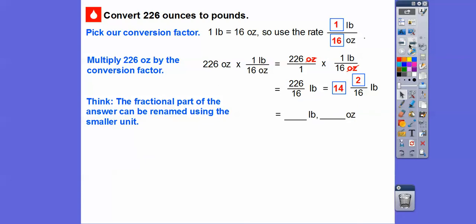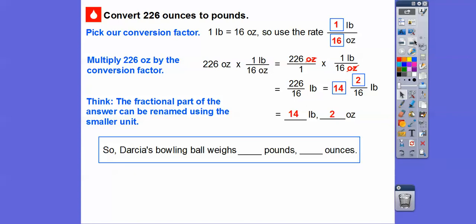This is going to be represented as 14 and 2 sixteenths. The fractional part of the answer can be renamed using the smaller unit. Instead of 2 sixteenths of a pound, since 1 pound equals 16 ounces, 2 sixteenths is going to represent 2 ounces. So this is going to be 14 pounds and 2 ounces. Darcia's bowling ball weighs 14 pounds and 2 ounces.